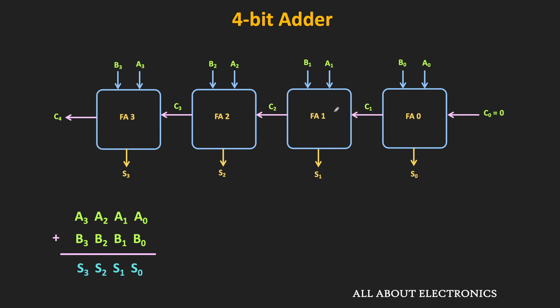The carry generated from FA0 is given as input to the next full adder FA1, which adds A1 and B1 along with the previous carry C1. Likewise, each subsequent full adder adds two bits along with the carry from the previous adder, generating a sum bit and a carry bit. This is the schematic of the four-bit adder.